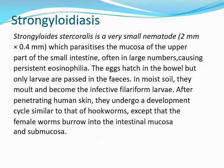Strongyloides stercoralis is a very small nematode about 2 mm by 0.4 mm which parasitizes the mucosa of the upper part of the small intestine in large numbers, causing persistent eosinophilia. The eggs hatch in the bowel but only larvae are passed in the feces. In moist soil they molt and become the infective filariform larvae. After penetrating human skin, they undergo a development cycle similar to hookworms, except that the female worms burrow into the intestinal mucosa.